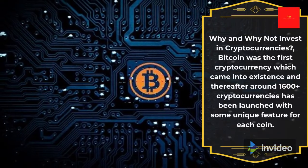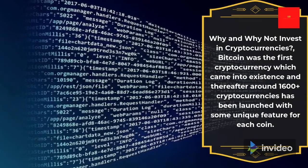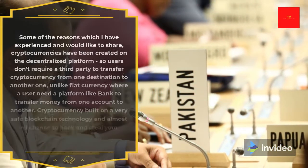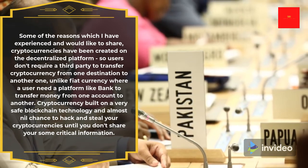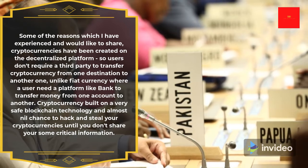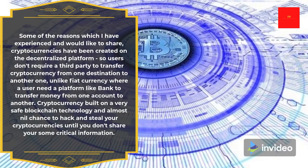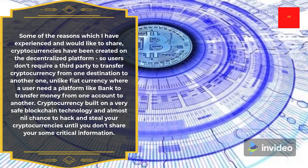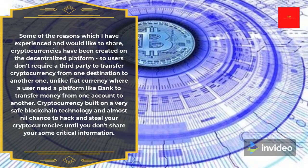Why and why not invest in cryptocurrencies? Bitcoin was the first cryptocurrency to come into existence, and thereafter around 1,600 plus cryptocurrencies have been launched, each with some unique feature. Cryptocurrencies have been created on a decentralized platform, so users don't require a third party to transfer cryptocurrency from one destination to another, unlike fiat currency where a user needs a platform like a bank. Cryptocurrency is built on very safe blockchain technology with almost nil chance of being hacked or stolen, unless you share some critical information.